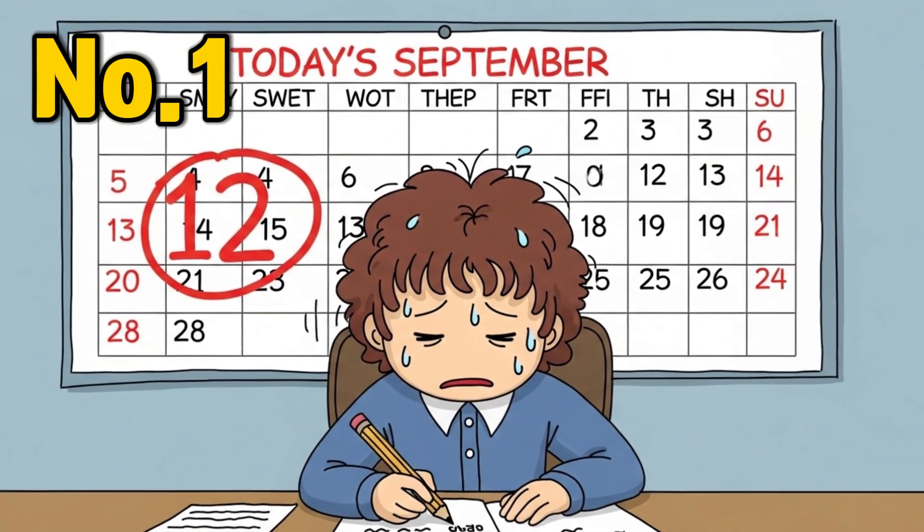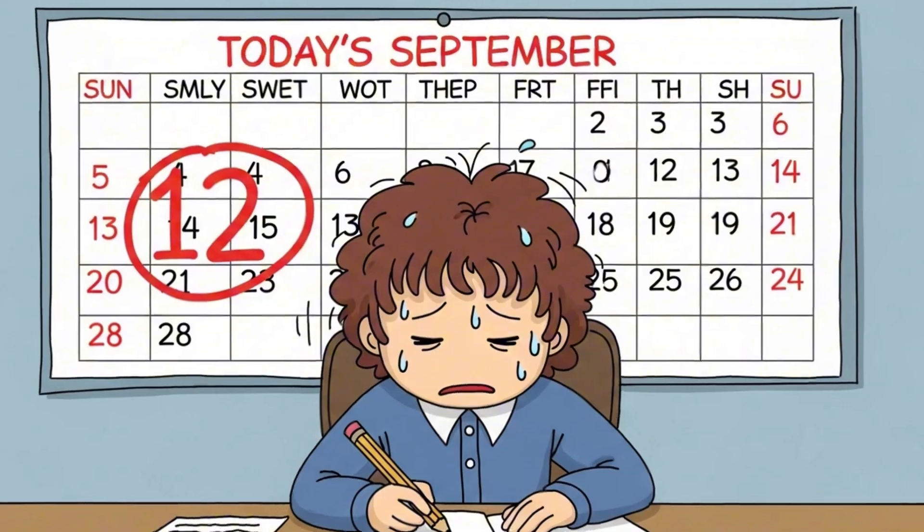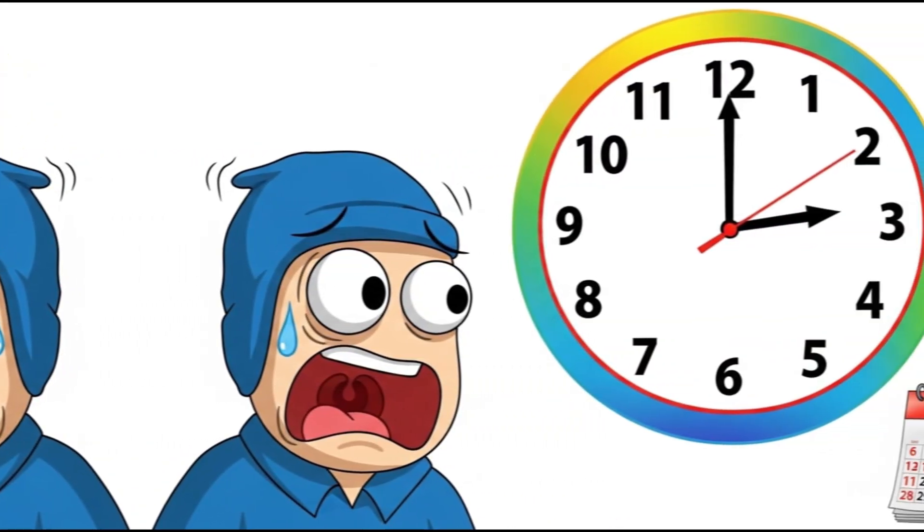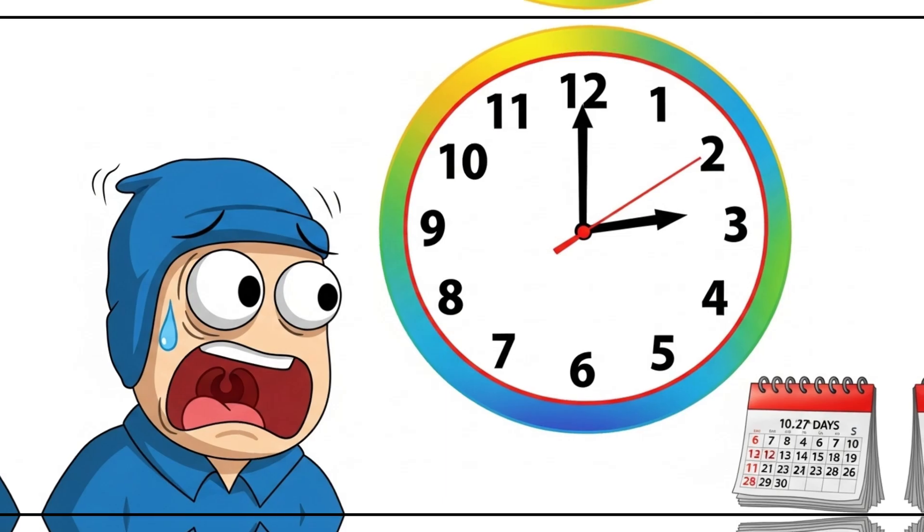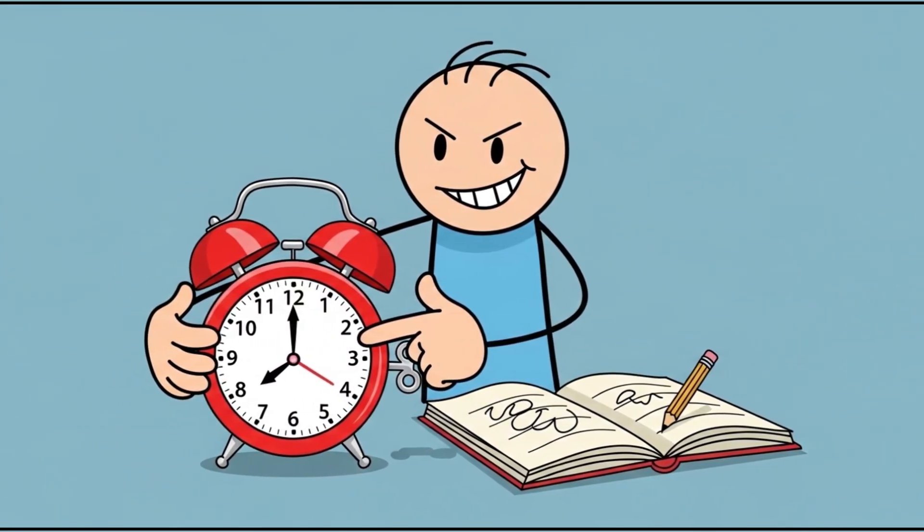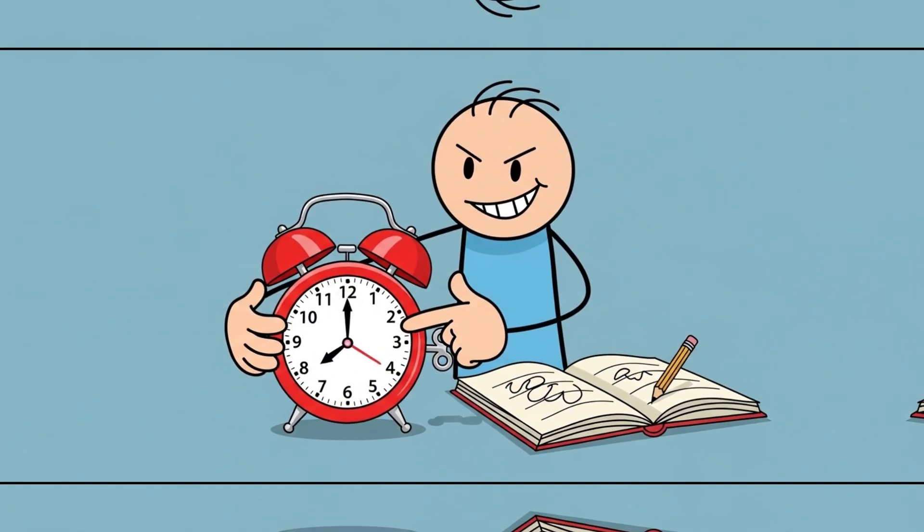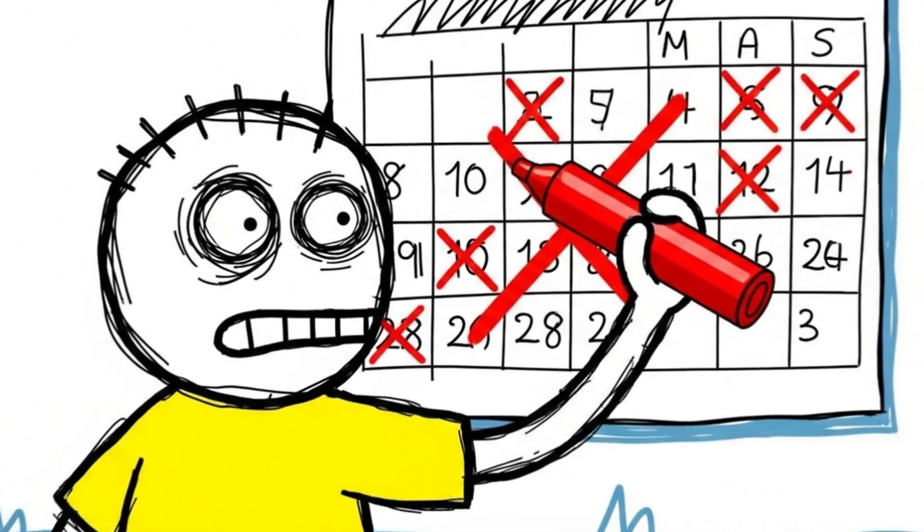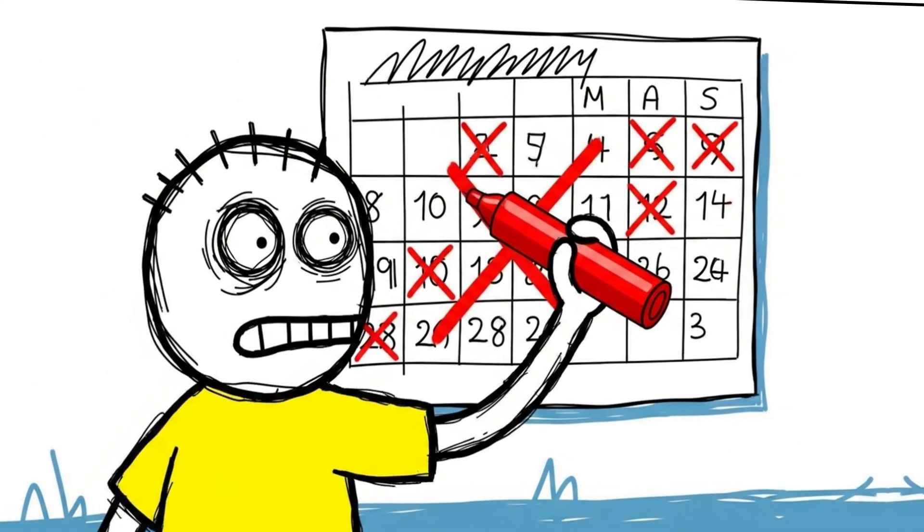Number 1. The Reverse Deadline Trick. While the rest of the world panics at the last minute, some brilliant minds create fake urgency months in advance. Nobel Prize-winning physicist Richard Feynman often set his own false due dates, convincing himself a project was almost overdue when it wasn't. The pressure flipped his brain into overdrive, triggering a burst of focus long before the real deadline.